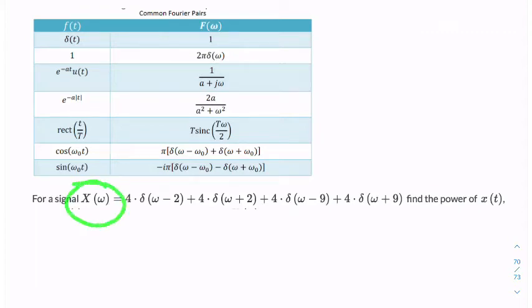In this question, we're given a signal in the frequency domain, and we're asked to find the power of that signal. But the question asks for the power of the signal in the time domain. It shouldn't make a difference, but the question is sort of nudging us towards finding the inverse Fourier transform of the signal.